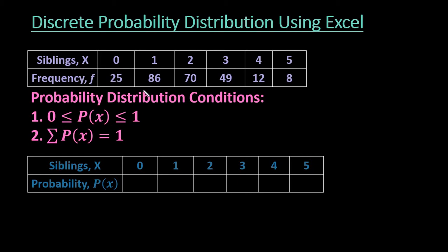My frequency is 25, 86, 70, 49, 12, and 8. In order to be a probability distribution, all of our individual probabilities have to be between 0 and 1. Zero means that there's a 0 frequency and 1 means that 100% of the values fall at that point. And then the sum of our probabilities also has to equal 1. So in order for this to be a probability distribution, these two conditions must be met.